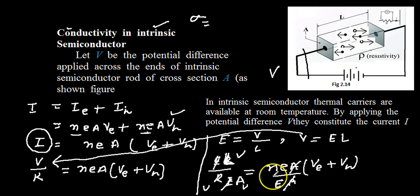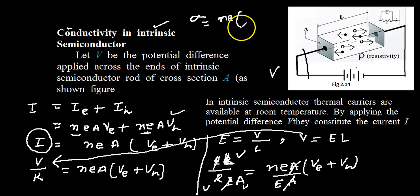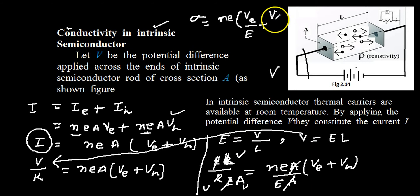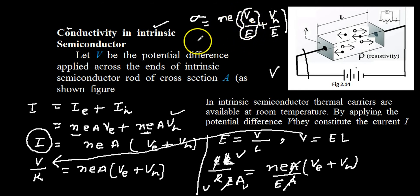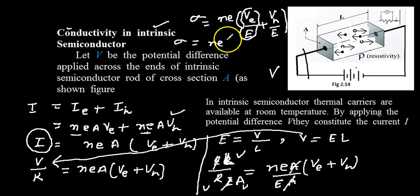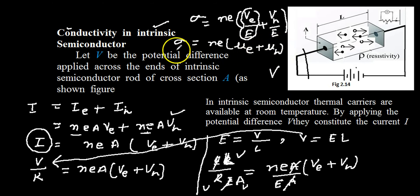So the conductivity becomes N·E multiplied by (Ve/E_field + Vh/E_field). The ratio of drift velocity to electric field is called mobility — a new term introduced here. Therefore the conductivity becomes N·E·(μe + μh), where μe and μh are the mobilities of the electron and hole. This is the final expression for conductivity in case of an intrinsic semiconductor.